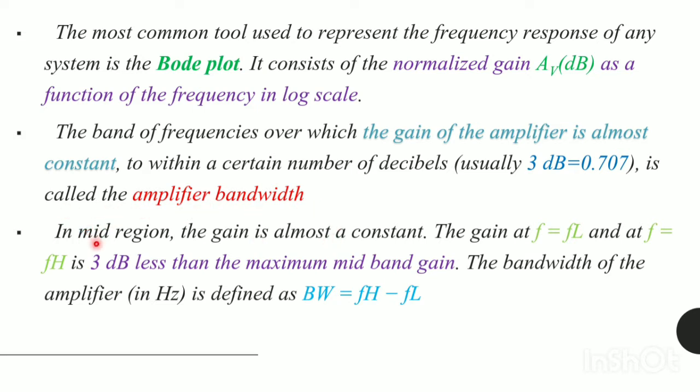If you see the mid-range, the gain is almost constant and the gain at F equal to FL, that is our low frequency, and at F equal to FH, that is our high frequency, is 3 dB less than the maximum mid-band gain. This 3 dB less than the maximum mid-band gain denotes our cut-off frequency. The bandwidth of the amplifier is defined as FH minus FL.